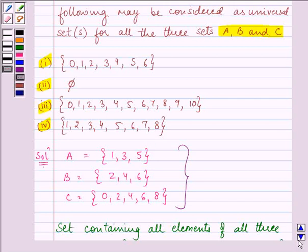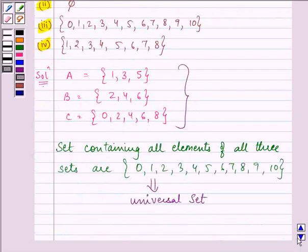So, that means that the universal set that we have found out is option 3.